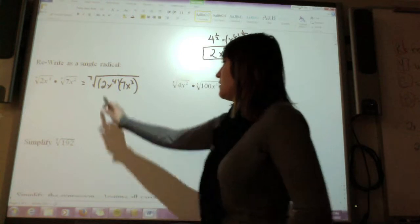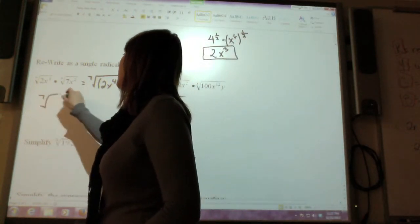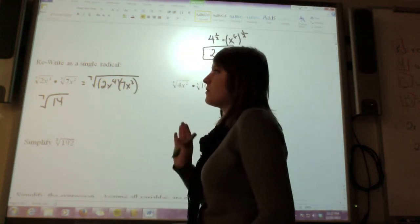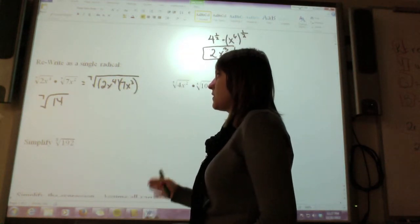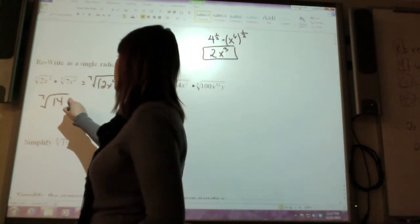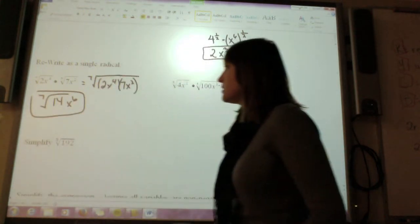Now, if I simplify those, I have 2 times 7, that gives me 14, and x to the fourth times x squared. Remember that if you have a base multiplied by the same base, you add the exponents, so this would be x to the sixth. So right there is my solution.